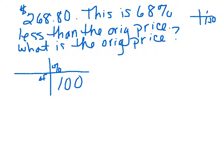All right, so let's analyze this a little bit. $268.80, is that 68% of a number? No. We need to find out that 100 minus the 68% is going to give us 32. So the $268.80 is 32% of some number.